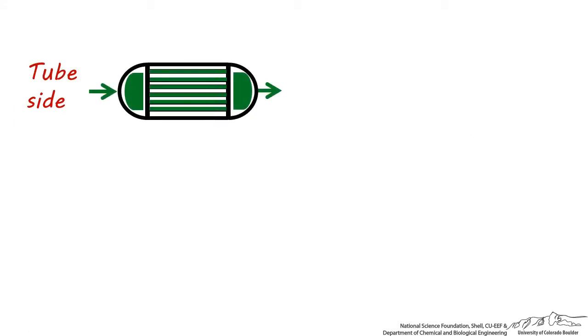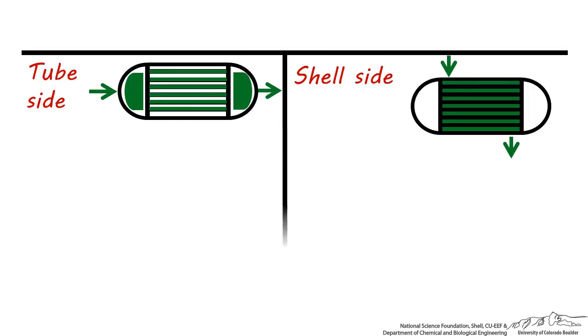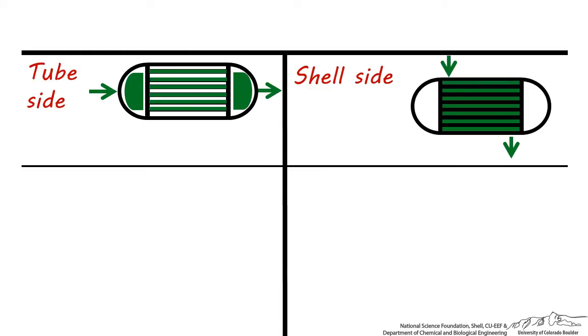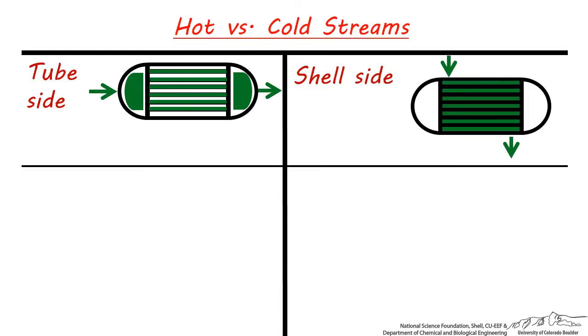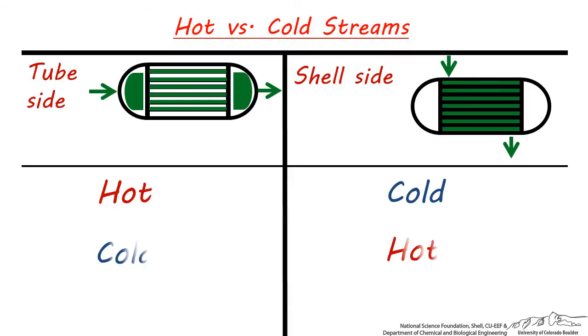Let's examine some scenarios for designating when a fluid should be tube-side and when it should be shell-side. It's important to remember that either the hot or the cold stream can be shell-side or tube-side. The temperature of the stream is not the deciding factor for fluid placement, so either the hot fluid could be tube-side and the cold fluid shell-side, or vice versa.